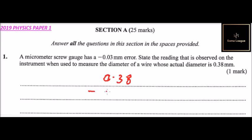When you subtract that, you'll be able to get 0.35. So the reading on the micrometer screw gauge will be 0.35 millimeters.